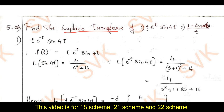Consider the first Laplace problem: we need to find the Laplace of t·e^(−t)·sin(4t), and also of (1 − cos(at))/t. Consider the given function as f(t) = t·e^(−t)·sin(4t).